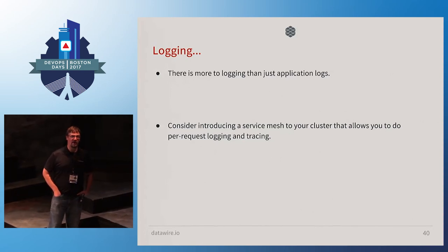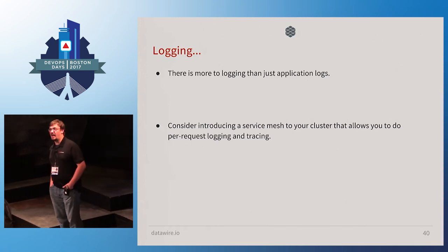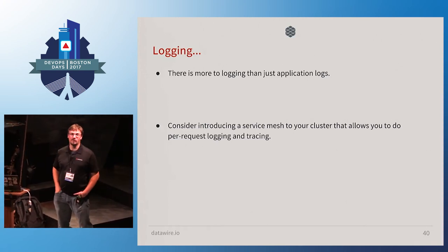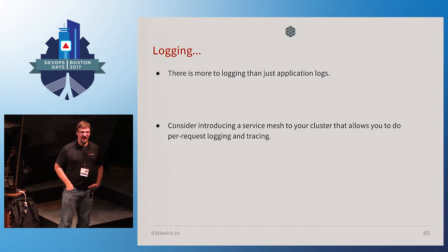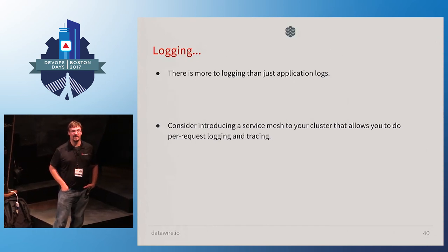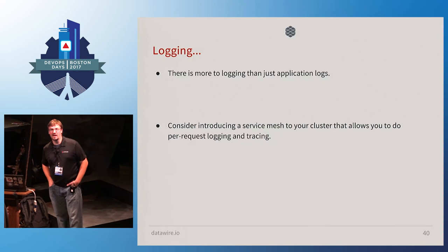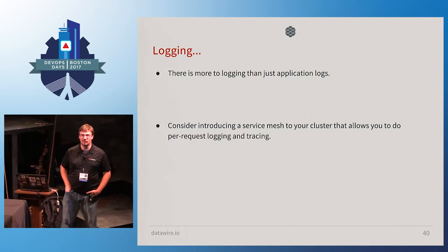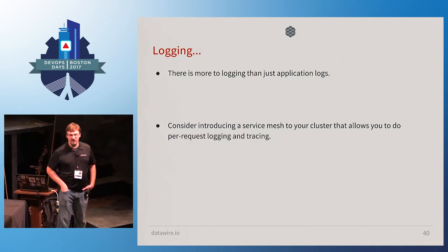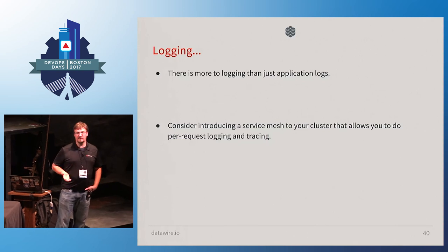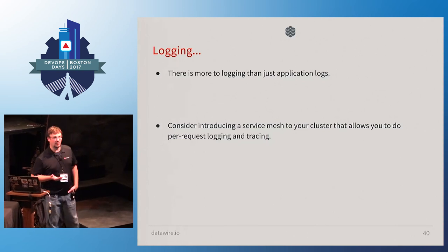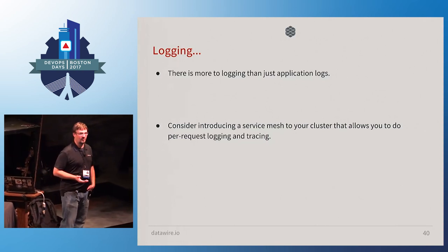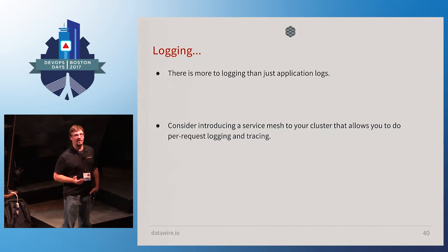There's also more to logging than just application logs. Logging along the request line within all of your application is really important and often missed. When something fails, you need to know where it failed — it went through services A, B, C, D, E, F, G, and somewhere something failed and cascaded up, but you have no logging about why, no logging about the parameters, and no way to trace it. When you get to this point — and you should quickly if you're building microservices — you want to start thinking about a service mesh.